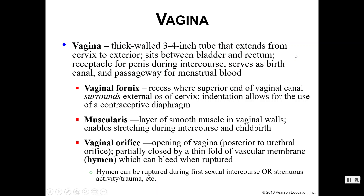If an egg has not been fertilized, it moves from the uterus down into the vagina. The vagina is a thick-walled tube, only about three to four inches long, extending from the cervix to the exterior environment. It sits between the bladder and the rectum. It serves as the receptacle for the penis during intercourse, the birth canal during childbirth, and the passageway for menstrual blood when no fertilized egg is present. The vaginal fornix is a recess where the superior end of the vaginal canal surrounds the external os, with anterior and posterior portions going all the way around.